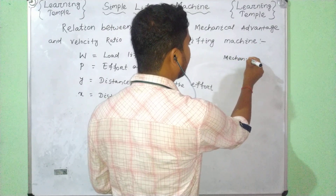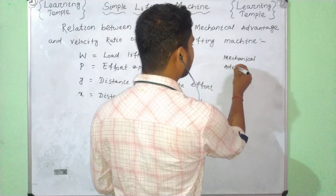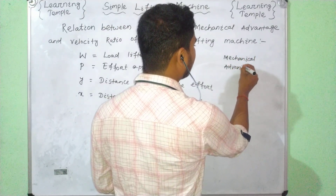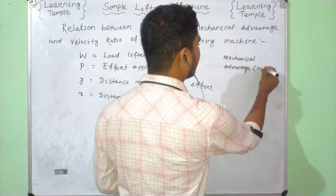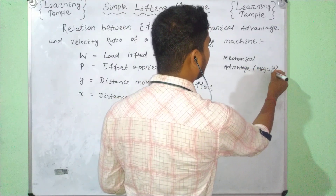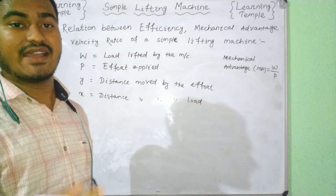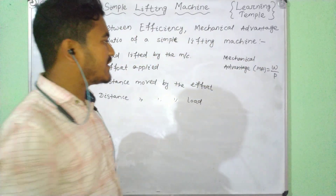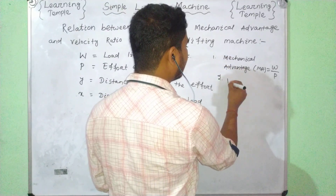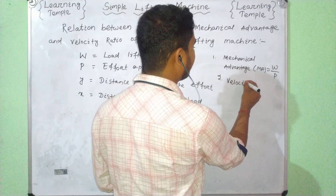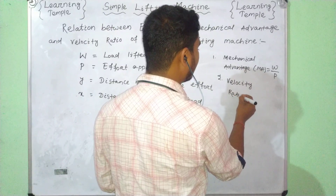Mechanical advantage, MA, equals W divided by P — that is, load lifted divided by effort applied. Similarly, velocity ratio is defined accordingly.